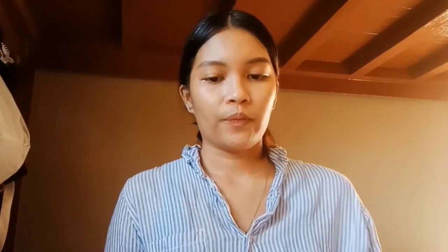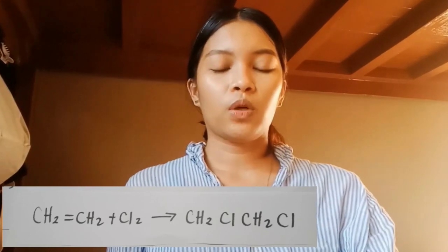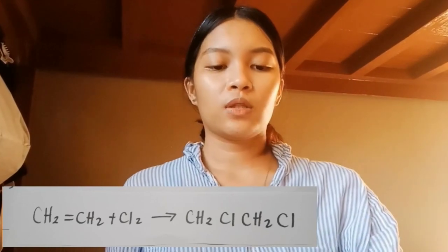Number 7: Give one simple equation showing addition of X2 to alkynes. We have CH2=CH2 plus CL2 to give CH2Cl-CH2Cl.